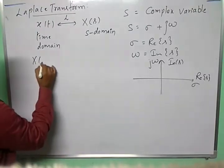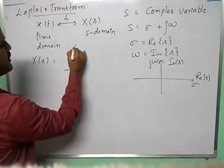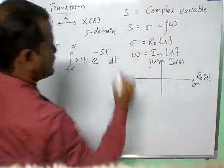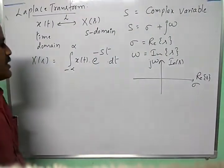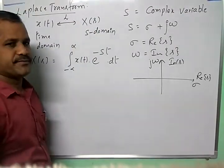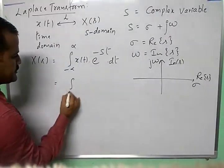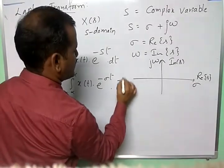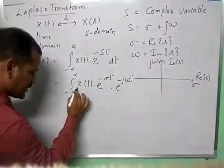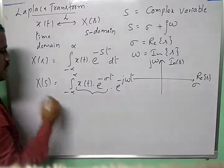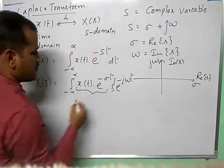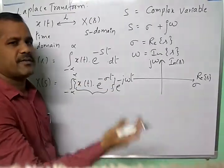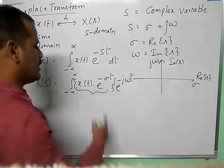The formula for X(s) is: the integral from minus infinity to plus infinity of X(t) multiplied by e to the power of minus st, dt. This is the Laplace transform formula used to transfer any signal from the time domain to the S domain. Substituting S = sigma + j-omega gives e to the power minus sigma-t, times e to the power minus j-omega-t. This function multiplied by e to the power minus j-omega-t is essentially the Fourier transform — we will discuss the relation between Laplace transform and Fourier transform while covering Fourier transforms.